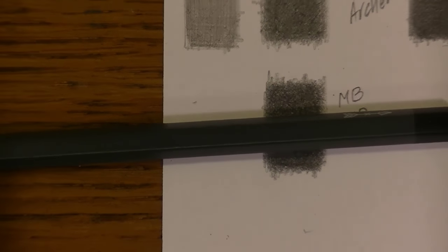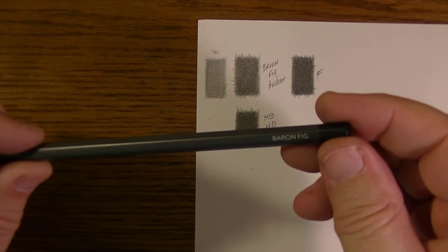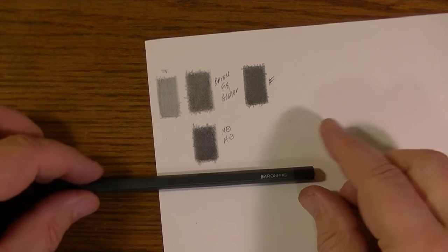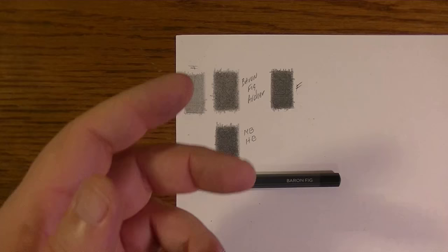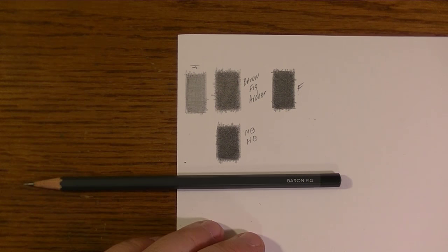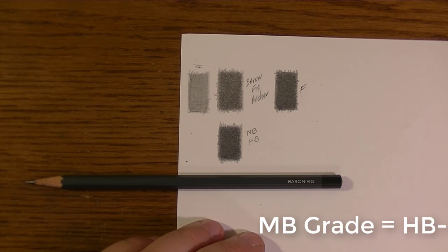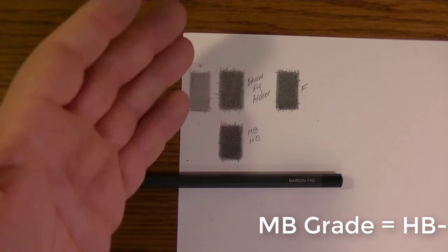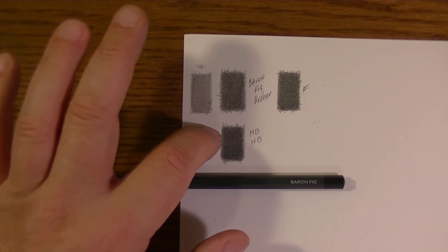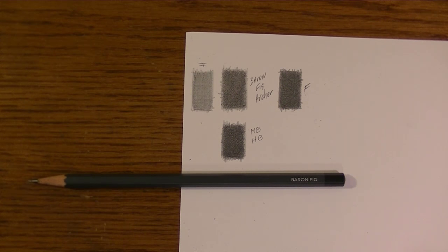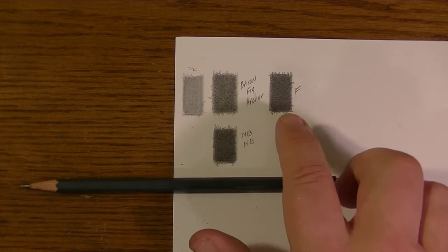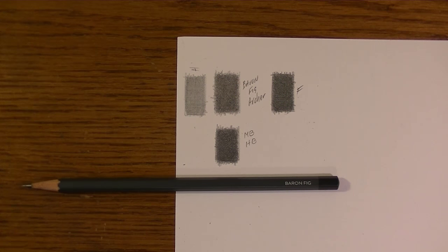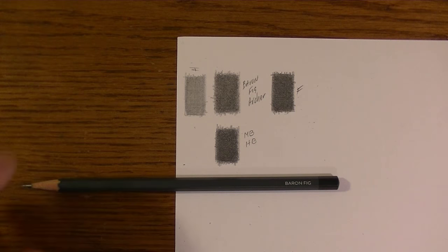That is basically where we are with the Baron Fig pencil. It doesn't exactly reach the level of an HB in tonal quality, tonal value, I should say. So it is lighter and harder than the HB range here in comparison to the Mitsubishi Hi-Uni pencils. It isn't even quite the tonal value of an F pencil, which is below the HB in this set. So there you go, folks. That's the Baron Fig Archer pencil from New York.